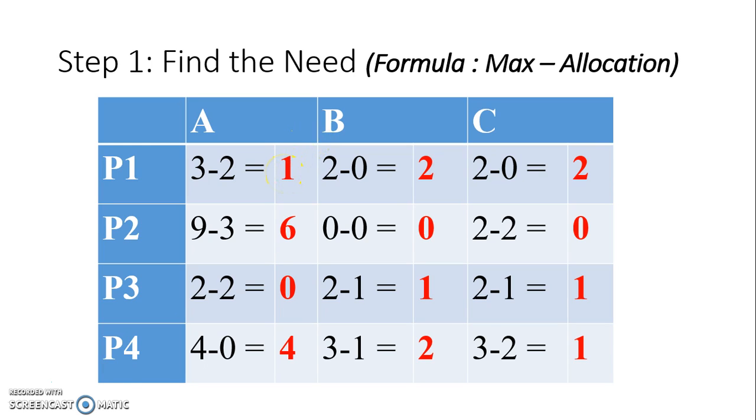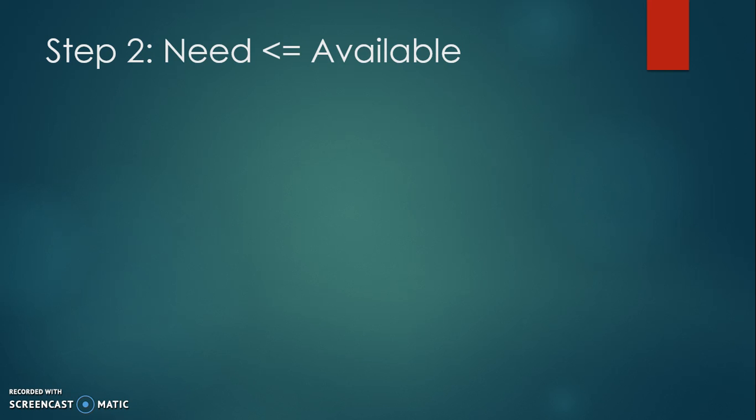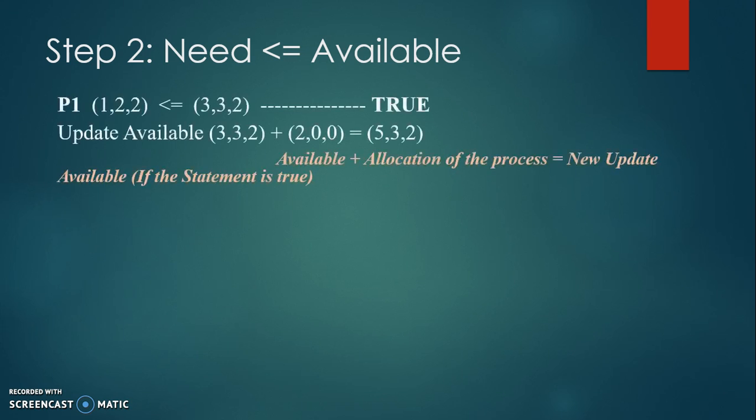Once you already get the needs table, then Step 2: you have to find whether the need is smaller than the available number, which is 3, 3, 2 from the available table. Once you've got that, here's the procedure to write down Step 2.